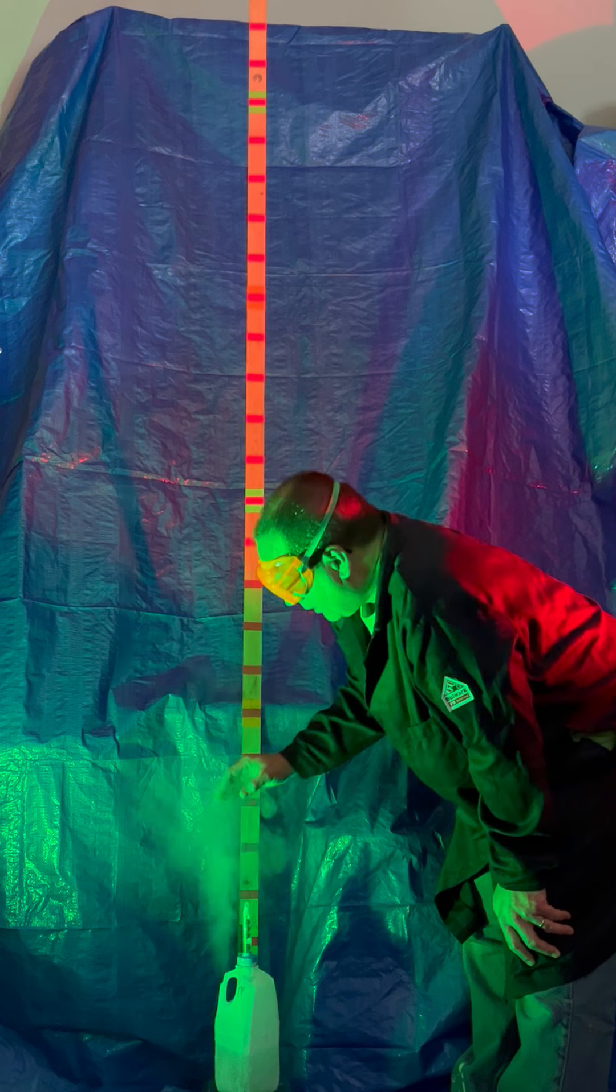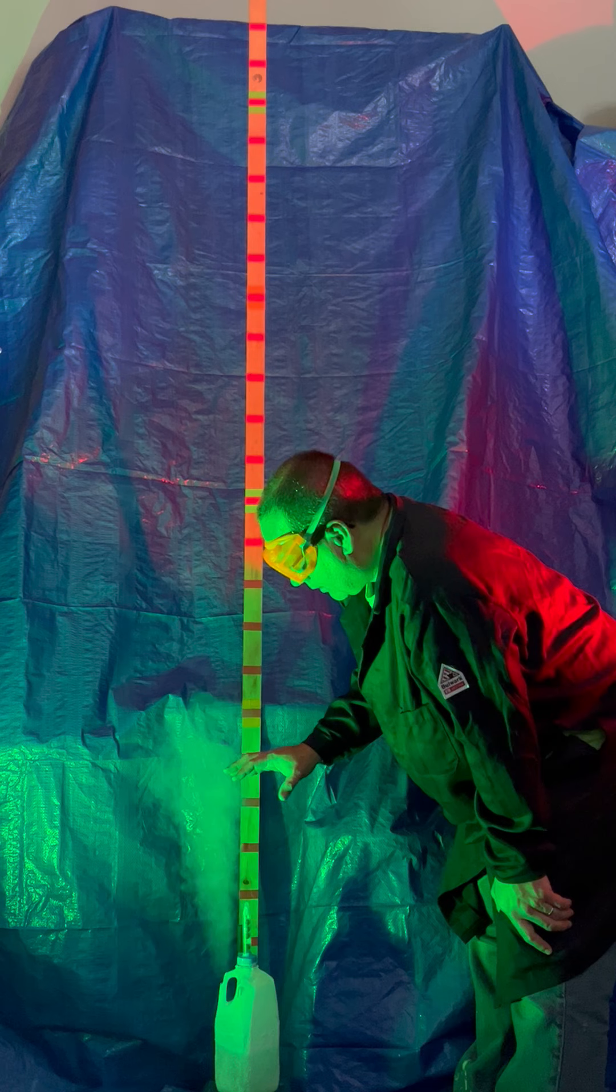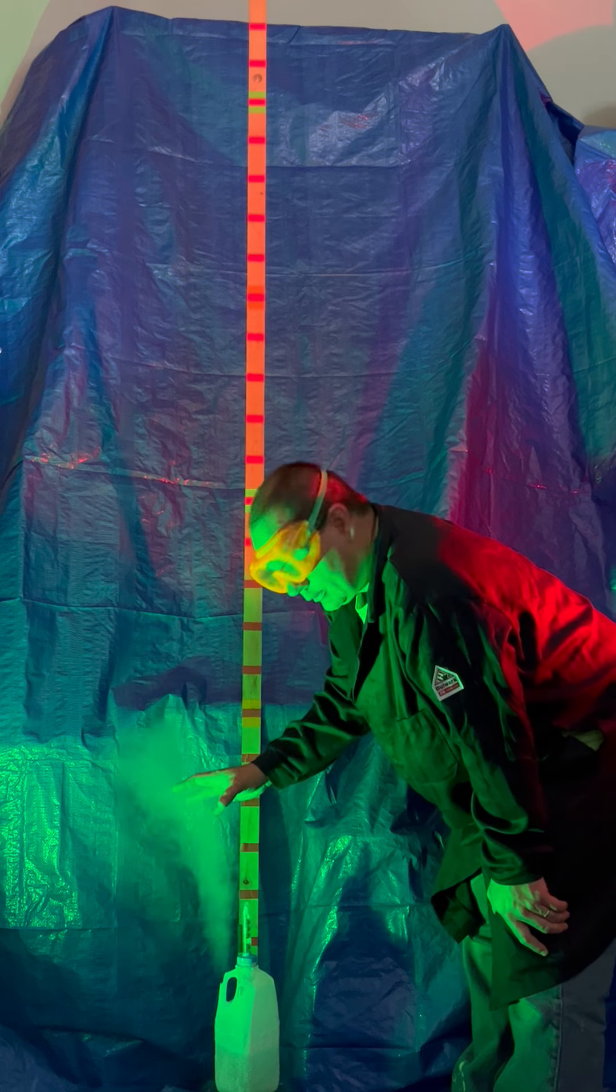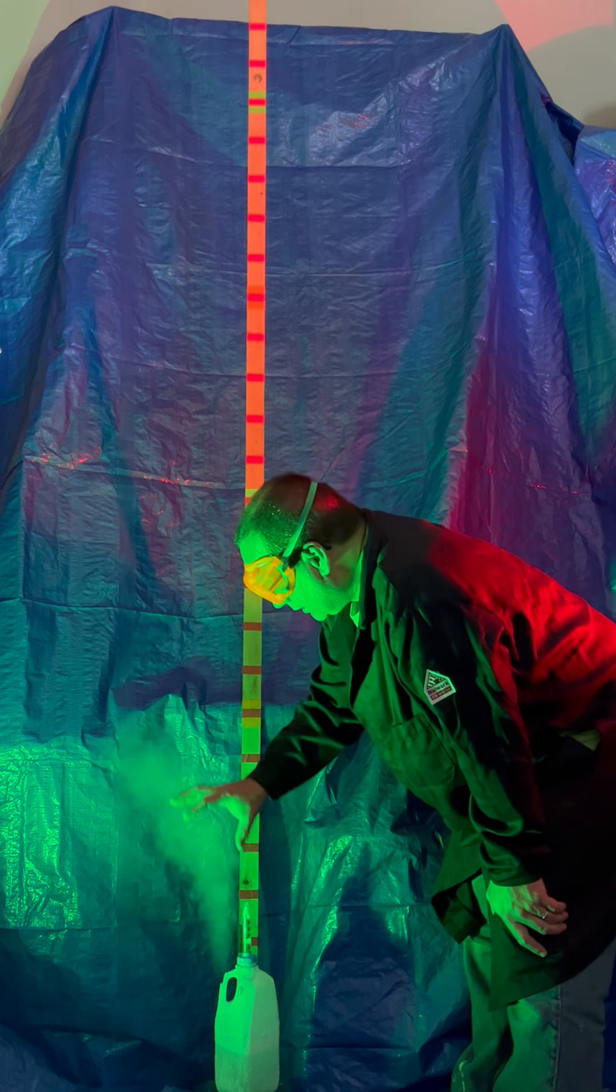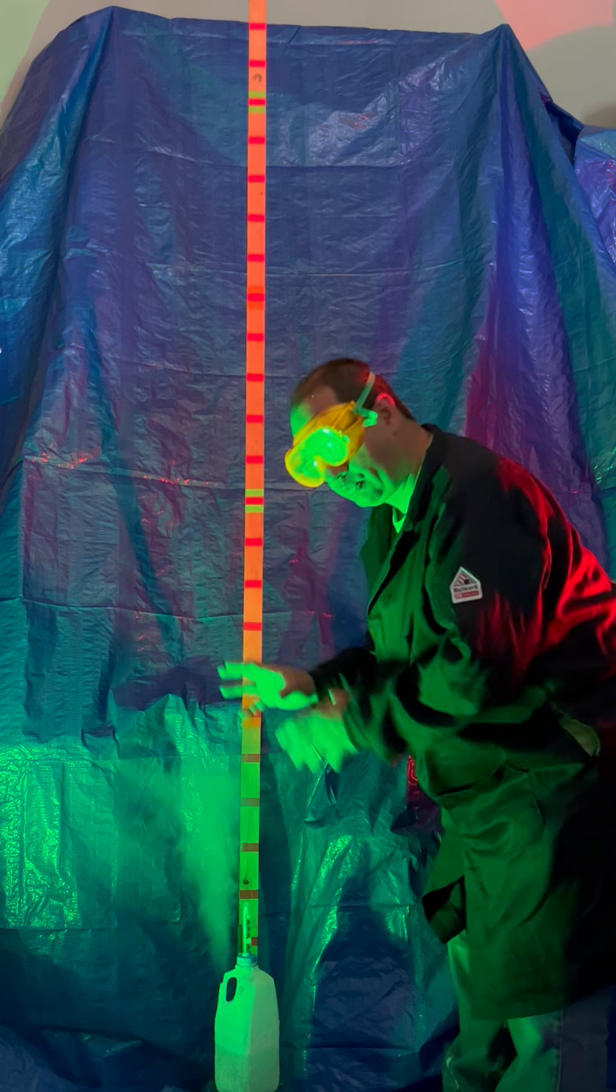The nitrogen vapor is coming out and causing the water vapor in the air, this very humid air, to condense to produce water droplets making this little plumy cloud here.